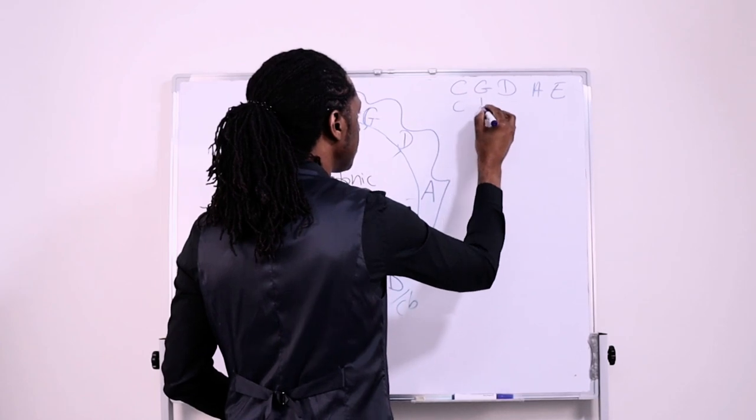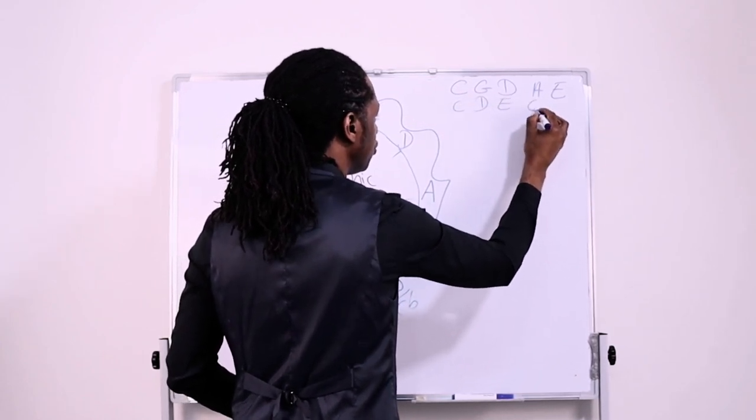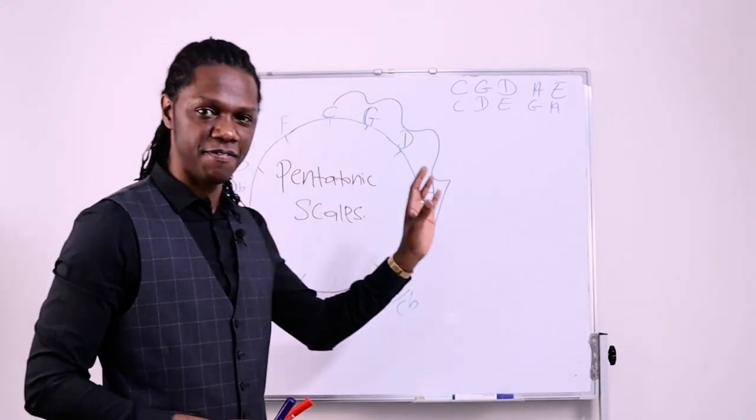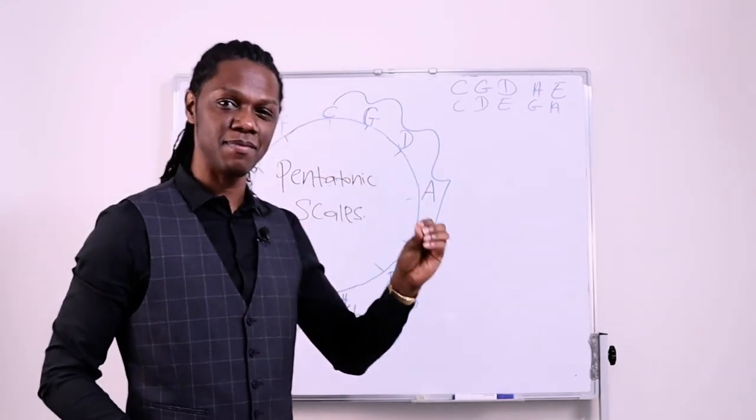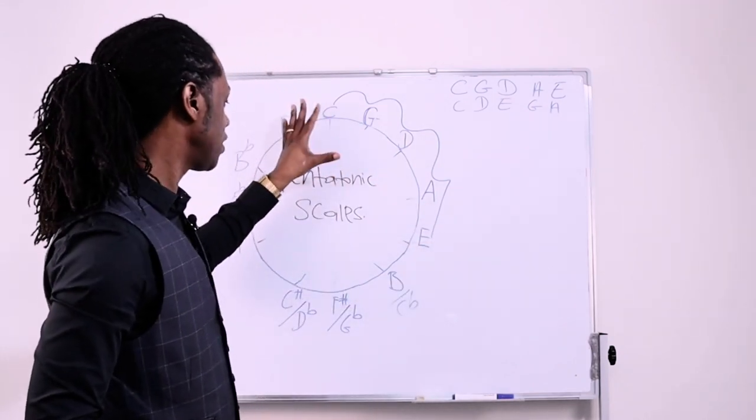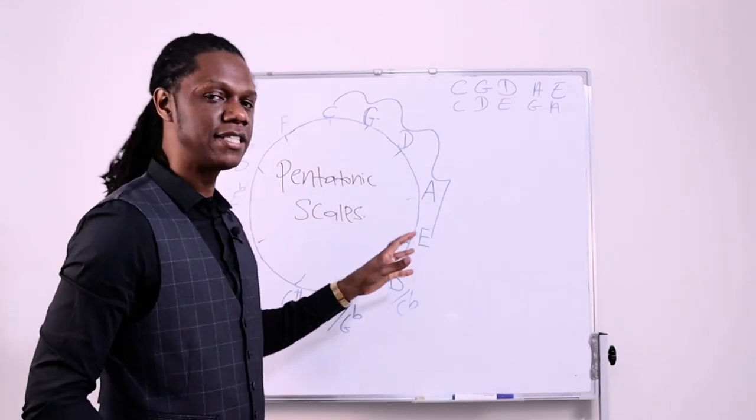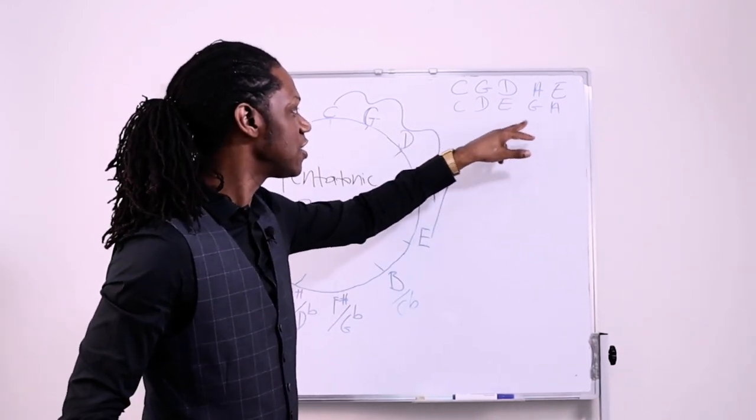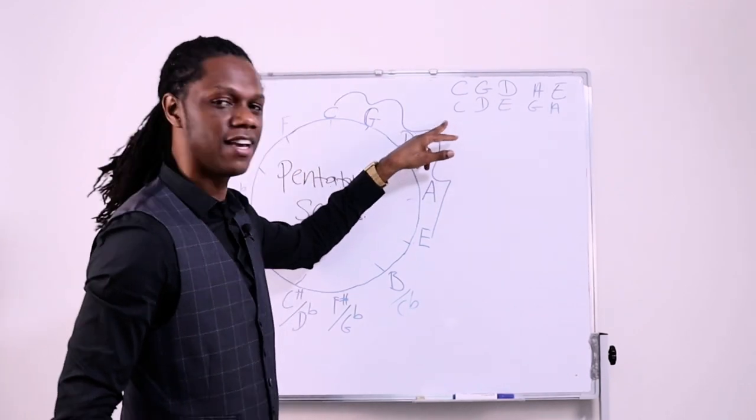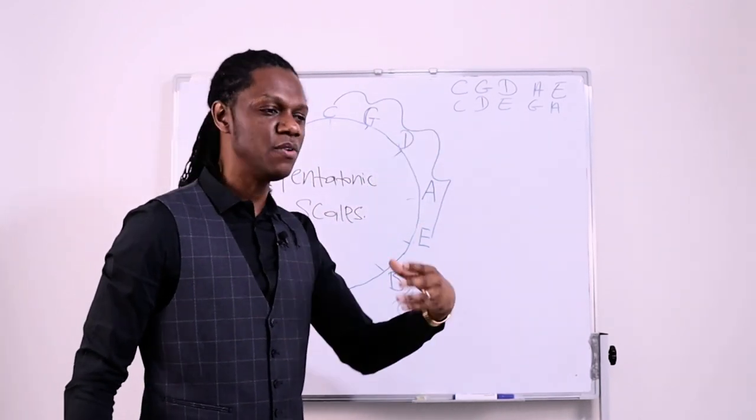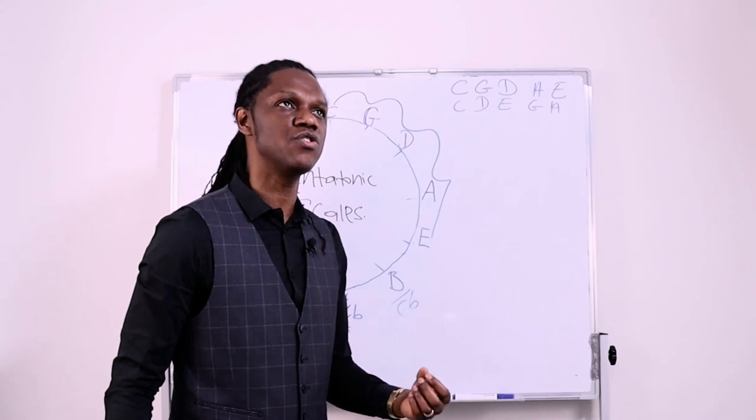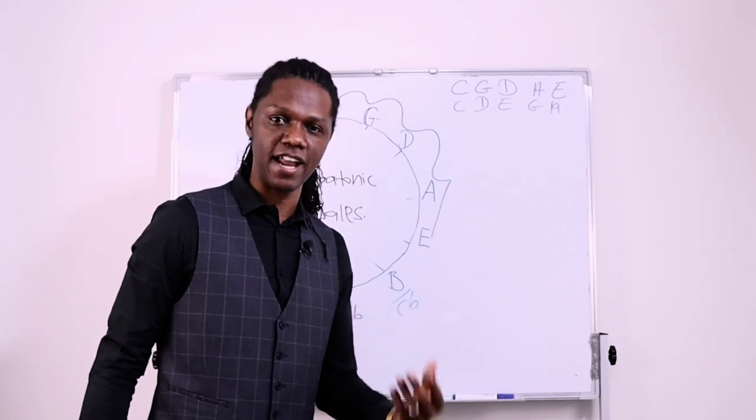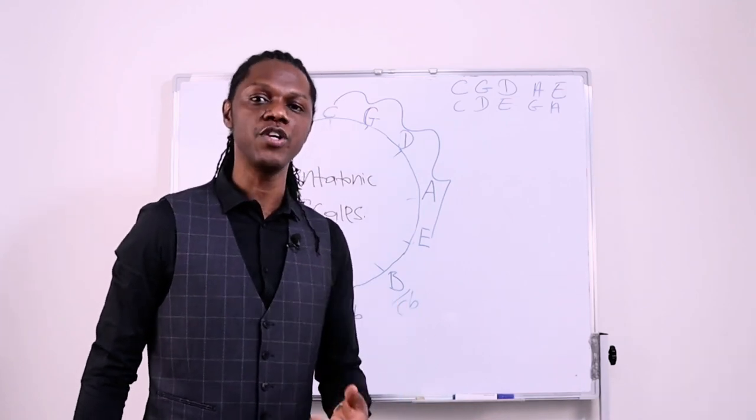But if we order them, it's going to be C, D, E, G, and A. Why would you want to learn it around the circle of fifths? It's very interesting. Without even being able to sight read, what you could do is just sit down with the circle of fifths and practice your pentatonic scales, not just in the regular way.